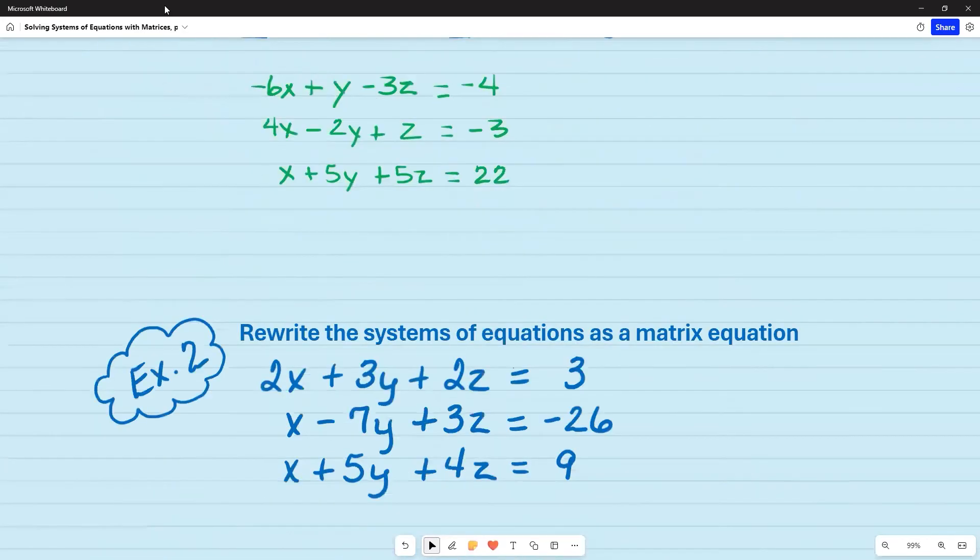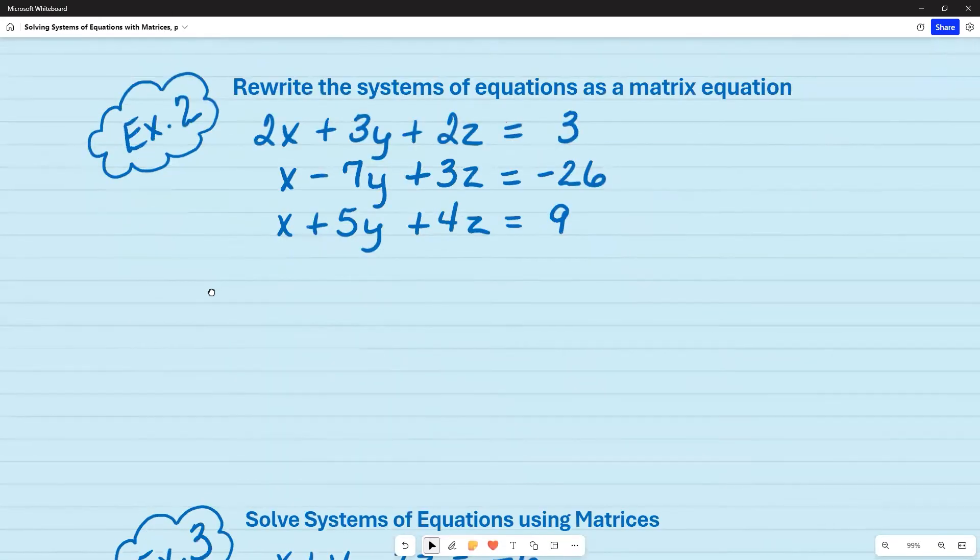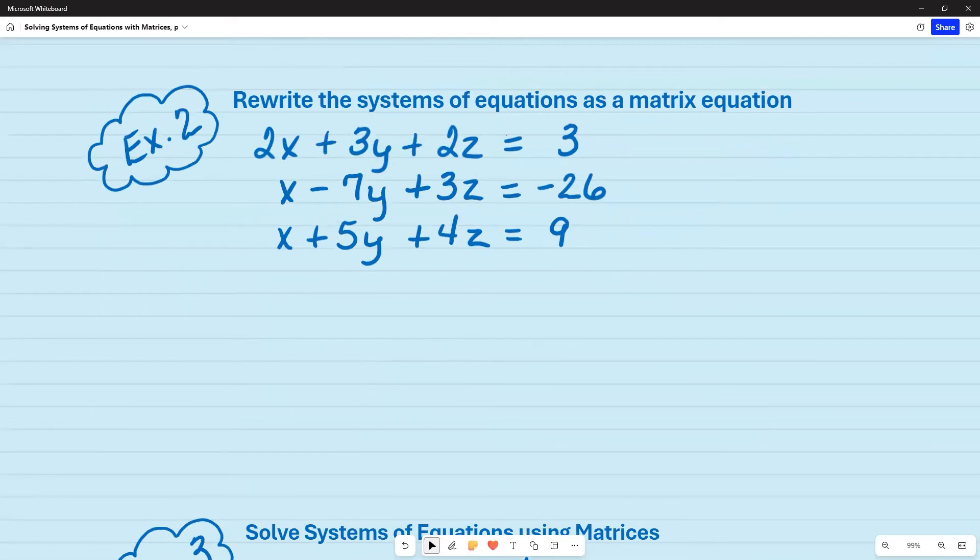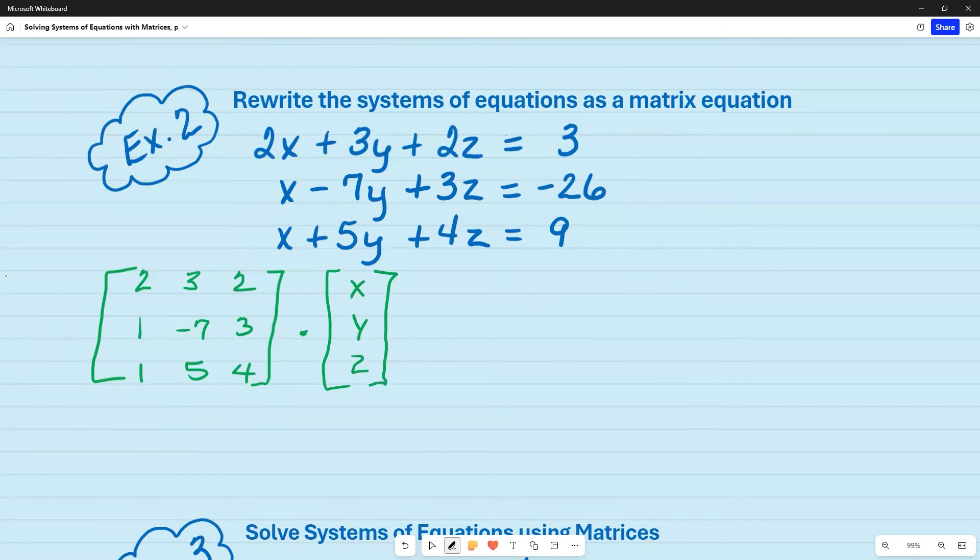So now we're going to go in reverse. We are given the systems of equations and we're asked to write it as a matrix equation. So I'm going to go to my coefficients and write those out. So I have 2, 3, 2, 1, negative 7, 3, 3, another 1, 5, and 4. So this is my coefficient matrix. I'm going to multiply this times the variable matrix of x, y, z. And then I'm going to set it equal to the constant matrix, which is 3, negative 26, 9.